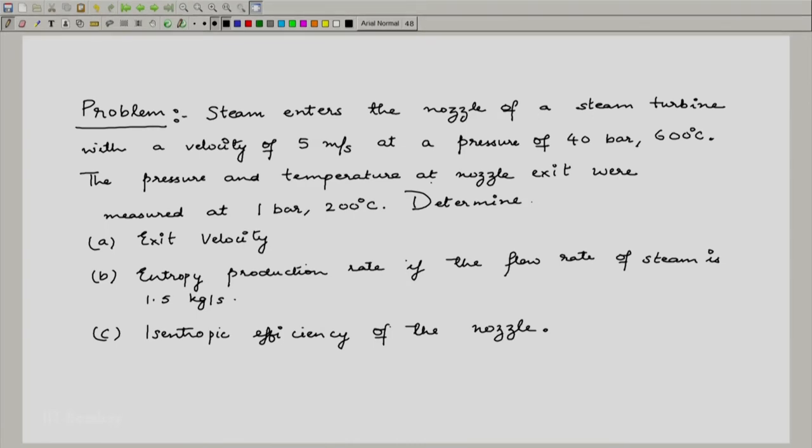Steam enters the nozzle of a steam turbine with a velocity of 5 meters per second at a pressure of 40 bar and the temperature is 600 degrees centigrade. The pressure and temperature at the nozzle exit were measured at 1 bar 200 degree centigrade.